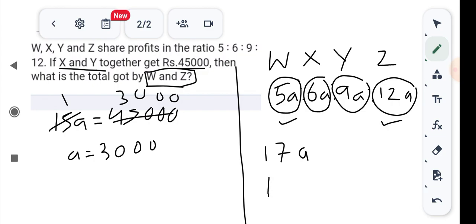17 multiplied by 3,000 - how much is that? 51,000. So this will be the answer for W and Z. Thank you.